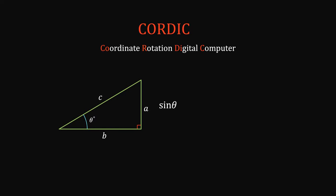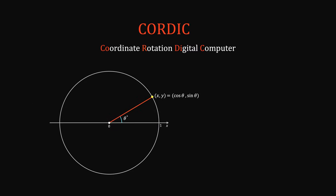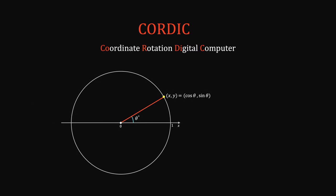Sine is defined as the ratio of the two sides in a right-angled triangle. Put it against a unit circle. Then the coordinates of the apex are the sines and cosines. So the job of finding the sines and cosines become finding the coordinates of a point on a unit circle.